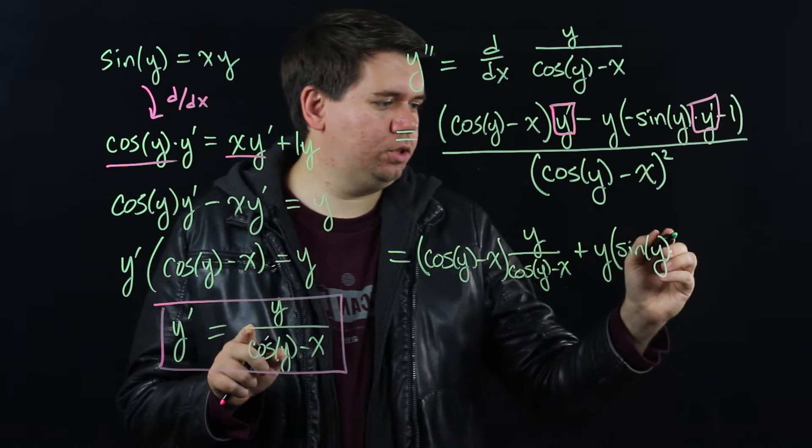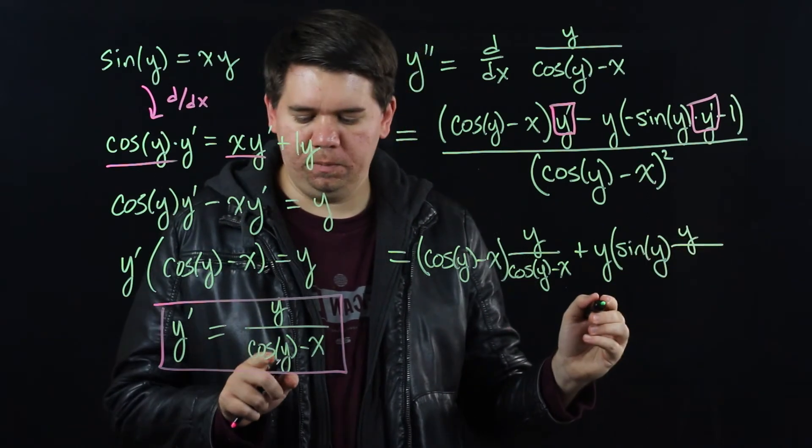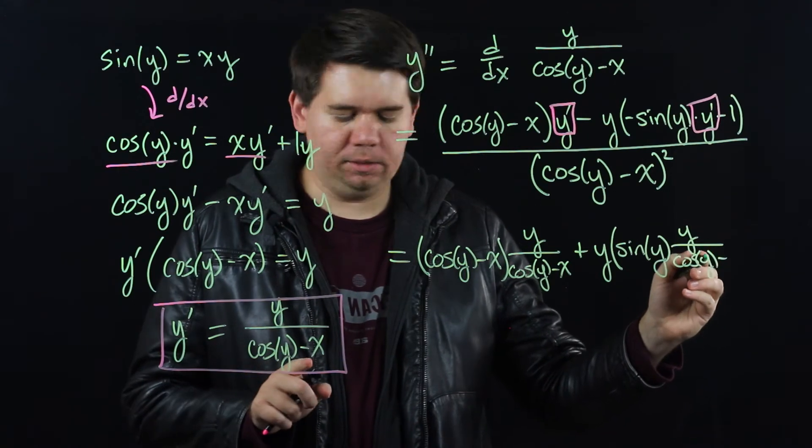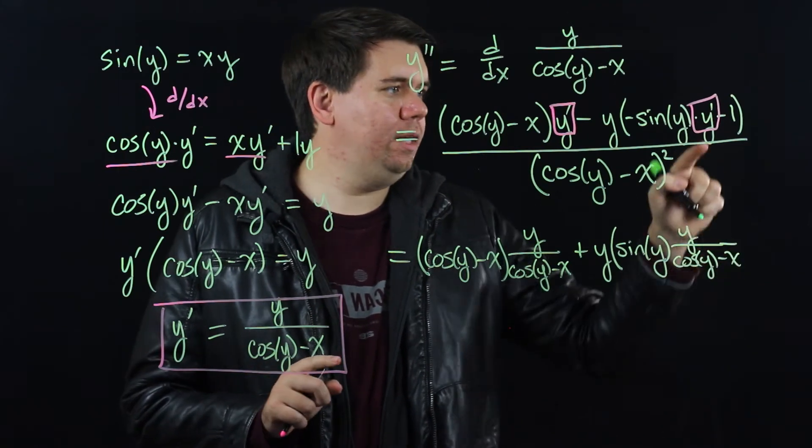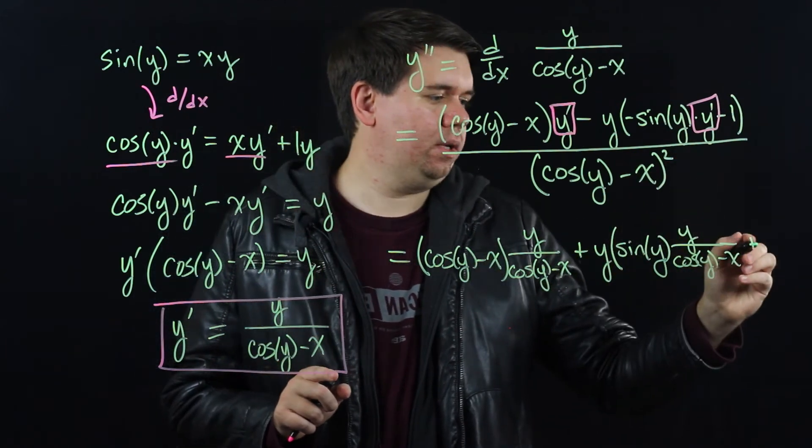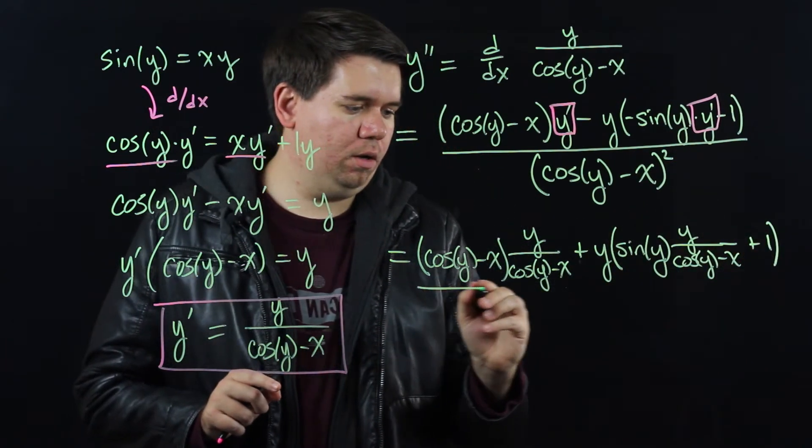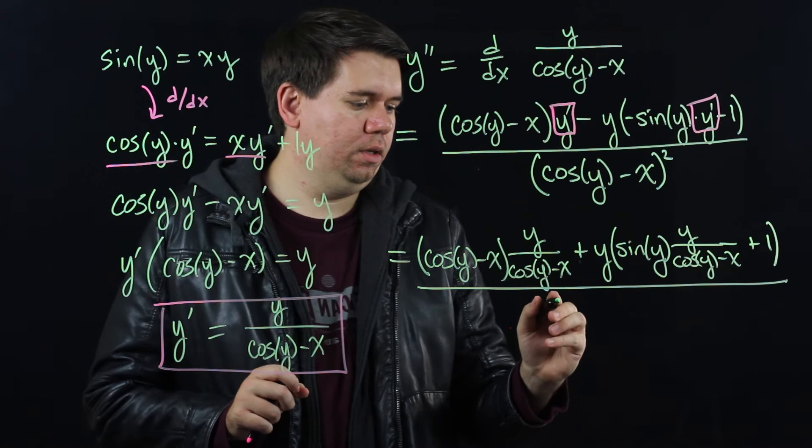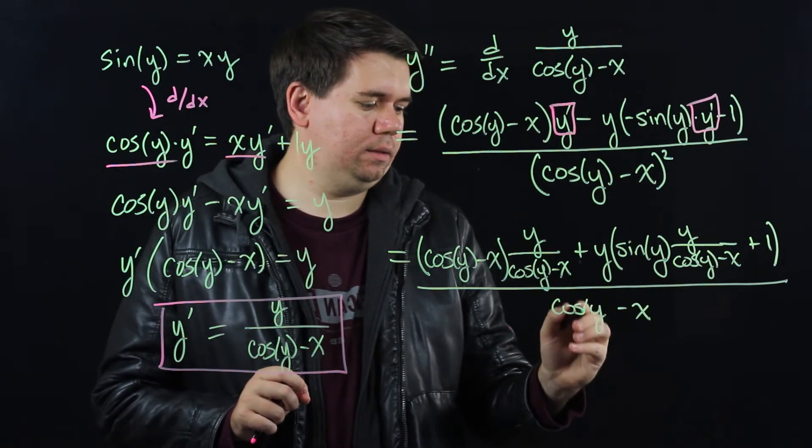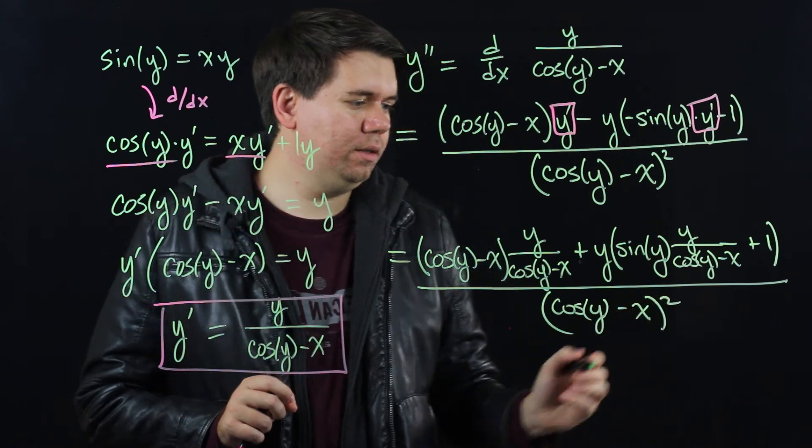So that y prime here is just y over cosine of y minus x. Then it was minus 1 but I pulled the minus out to make it plus, so it's plus 1, all over cosine of y minus x squared on the bottom.